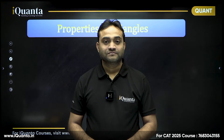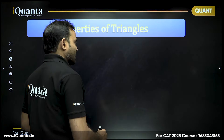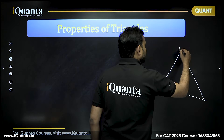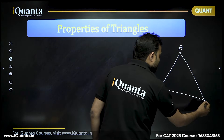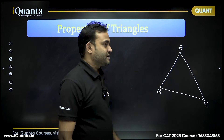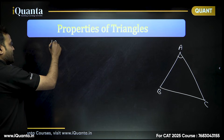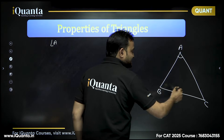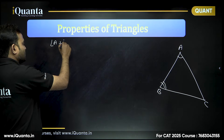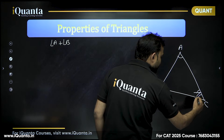Let's start with properties of triangles. In a triangle there are three vertices: vertex A, vertex B, and vertex C. Angle BAC we can call angle A, angle ABC we can call angle B, and angle ACB we can call angle C.